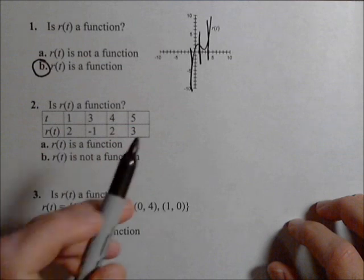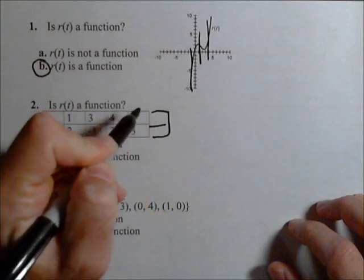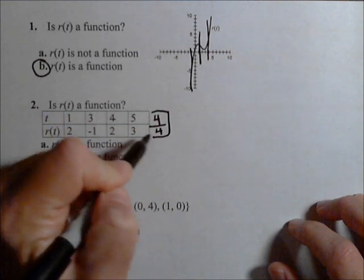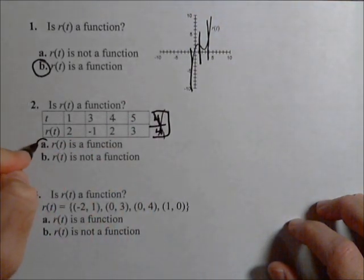So they all had a unique output. Now if we were to add another one here and put, let's say four comma four, now four has two different outputs, but that wasn't part of our original problem. So number two is also a function.